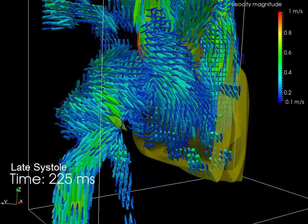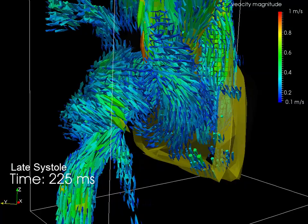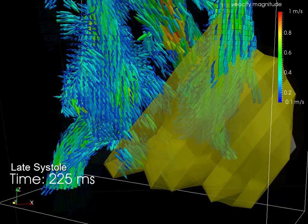Let's fade out the right atrium. Now we can see flow from the superior vena cava coming down and mixing with the inferior vena cava flow in the atrium.